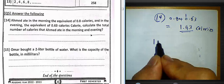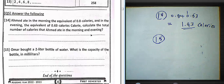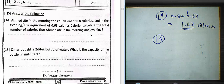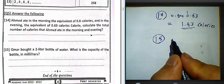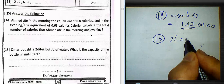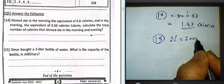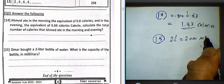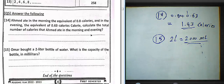Question number fifteen: Omar has 2 liters of water. To find the capacity in milliliters, multiply by 1000. The result is 2000 milliliters. This is the end of the questions. Goodbye.